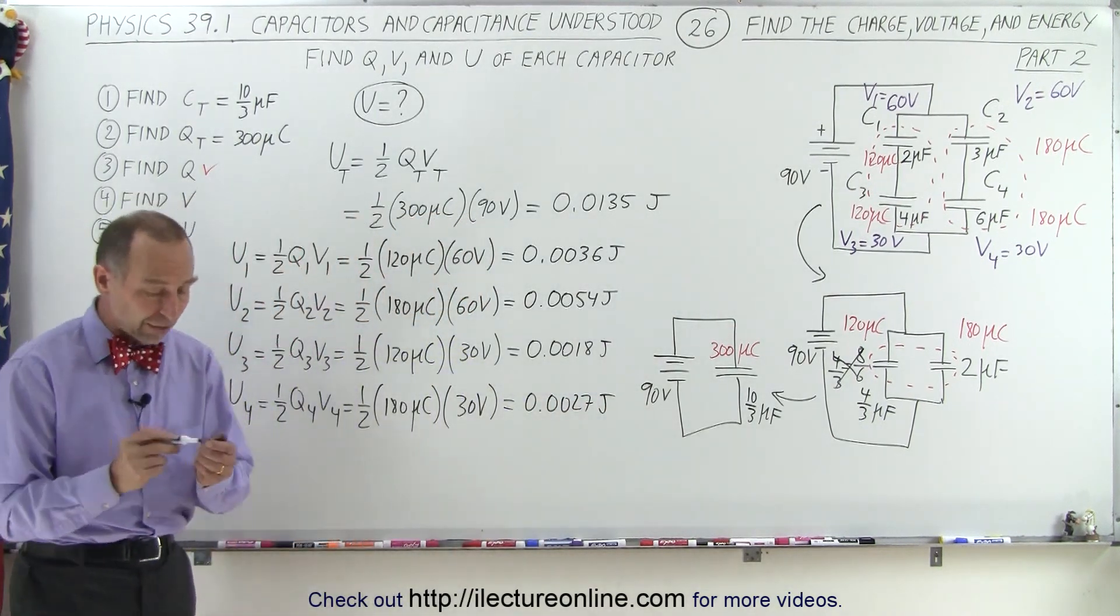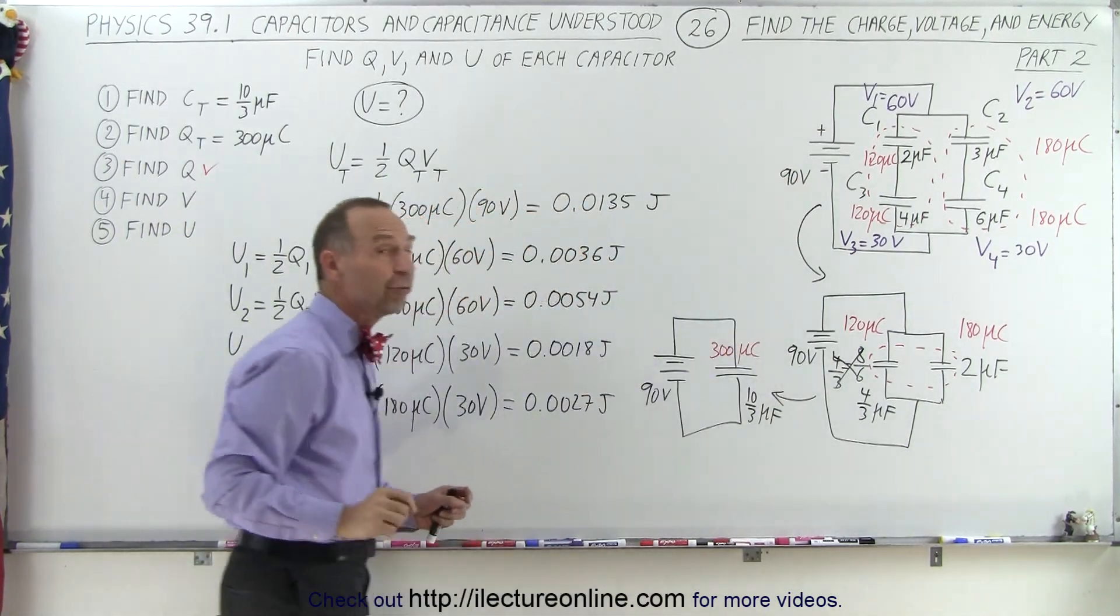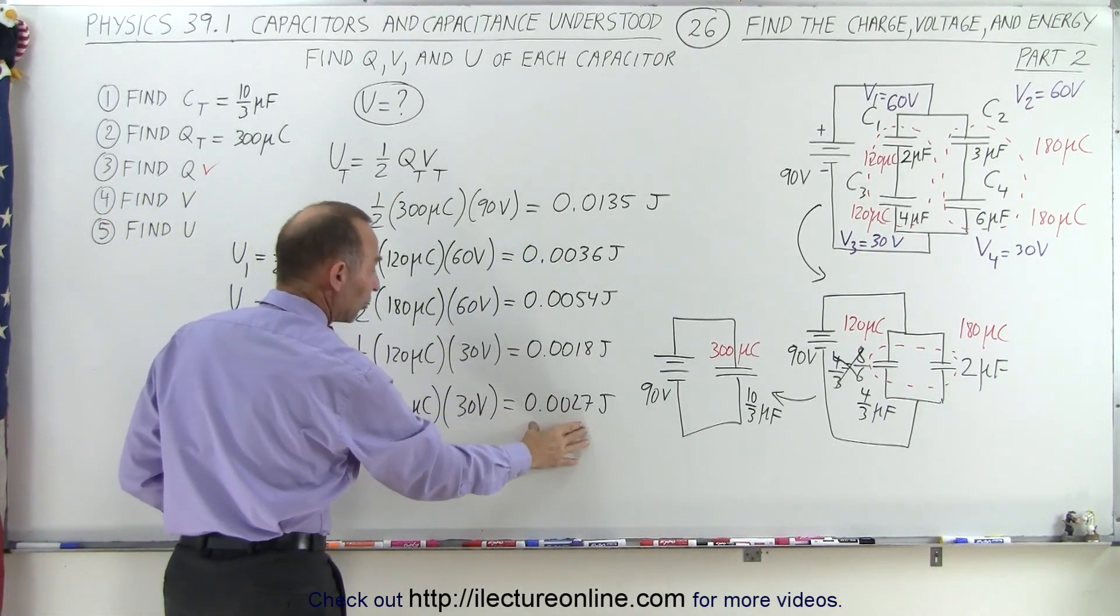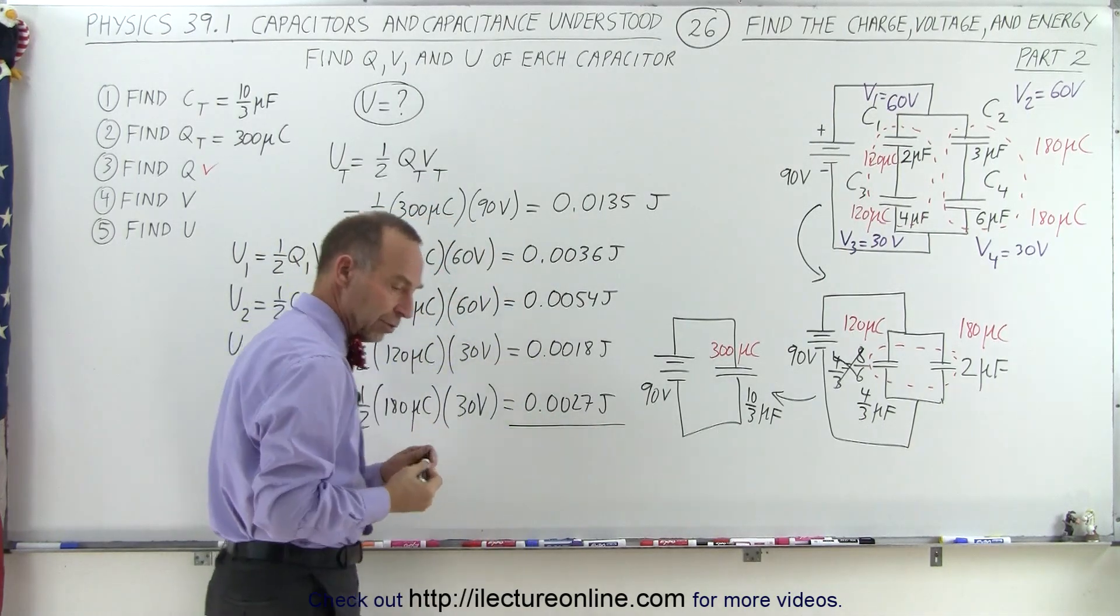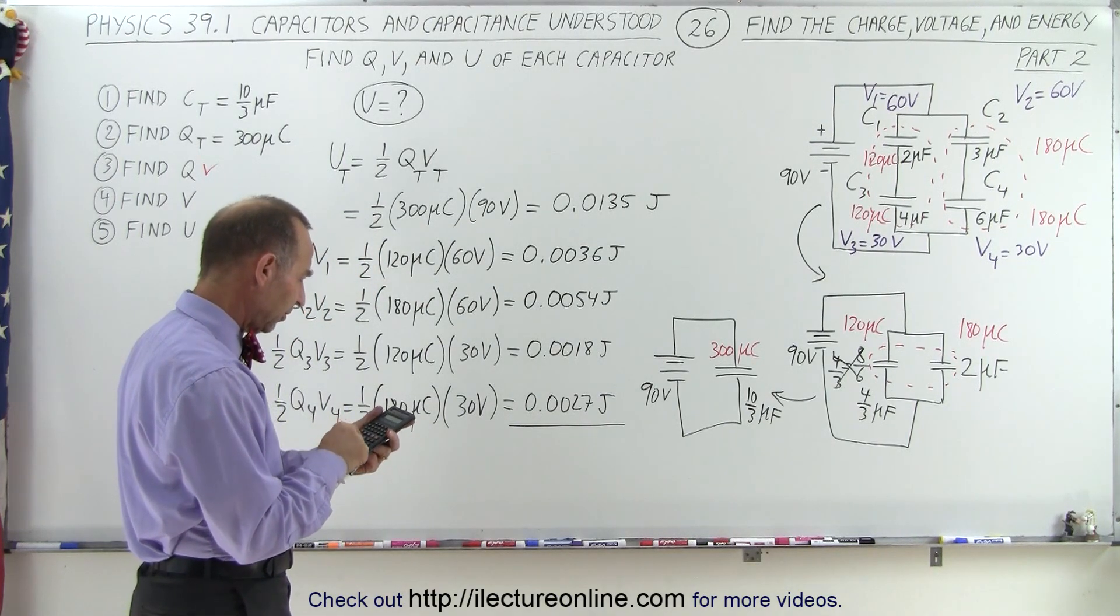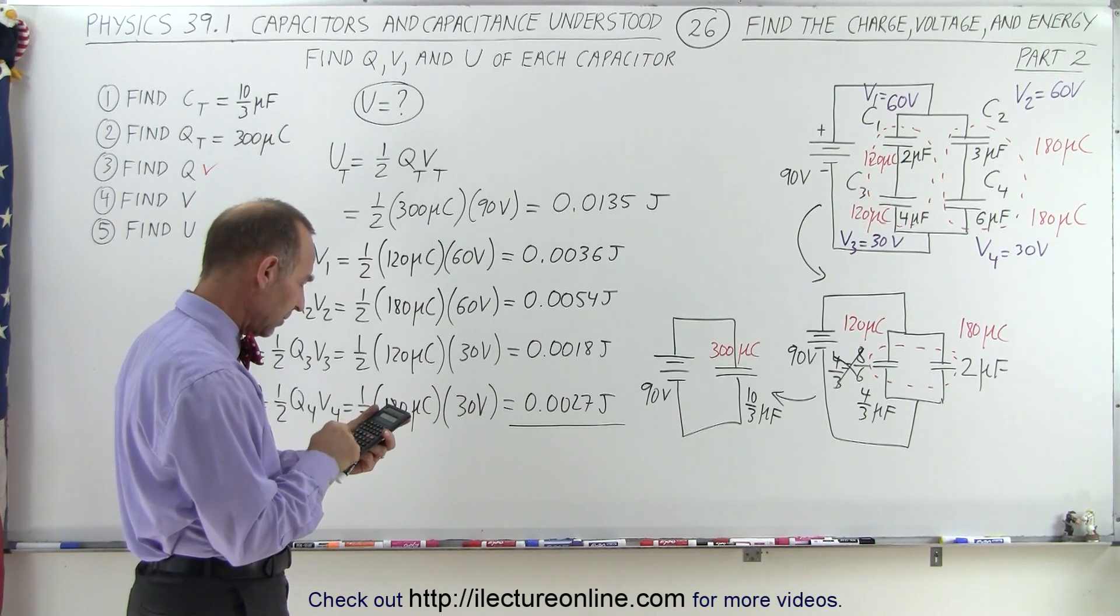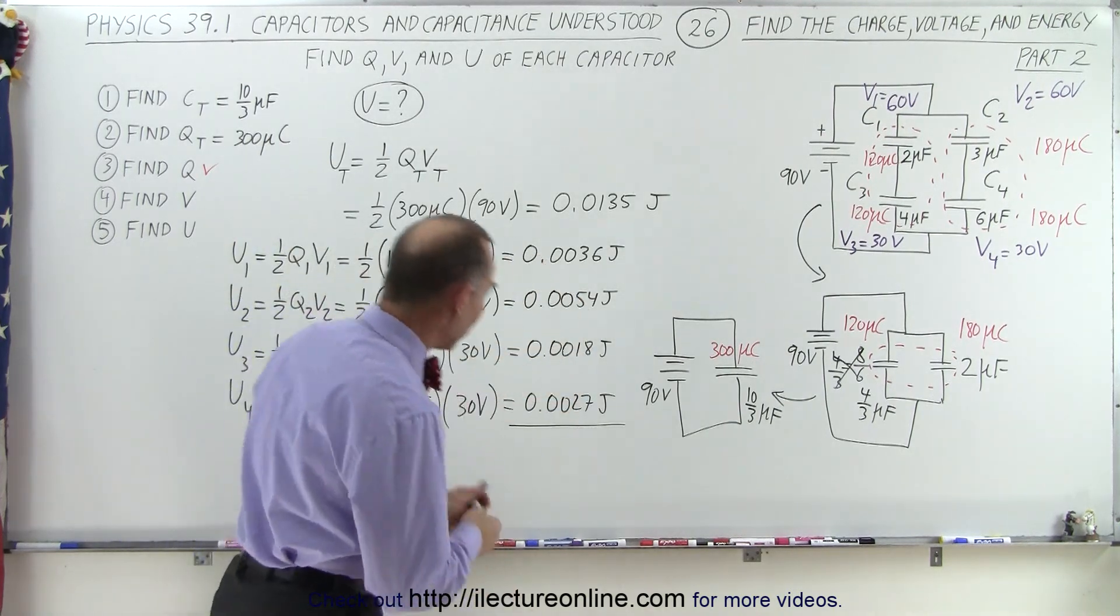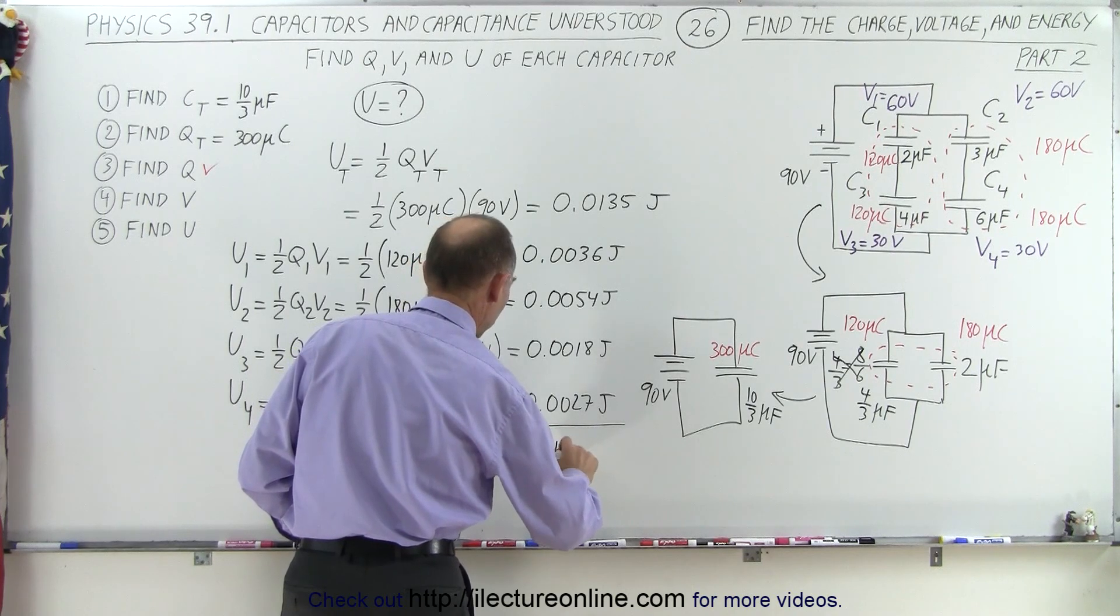All right, so now we've found the total energy on the equivalent circuit and the energy on each of the four capacitors. If we did it right, we should be able to add these four up, and that should add up to the one that we found for the equivalent circuit. So let's go ahead and do that. We have 0.0036 plus 0.0054 plus 0.0018 plus 0.0027, and sure enough, when you add them all up, you get 0.0135 joules.